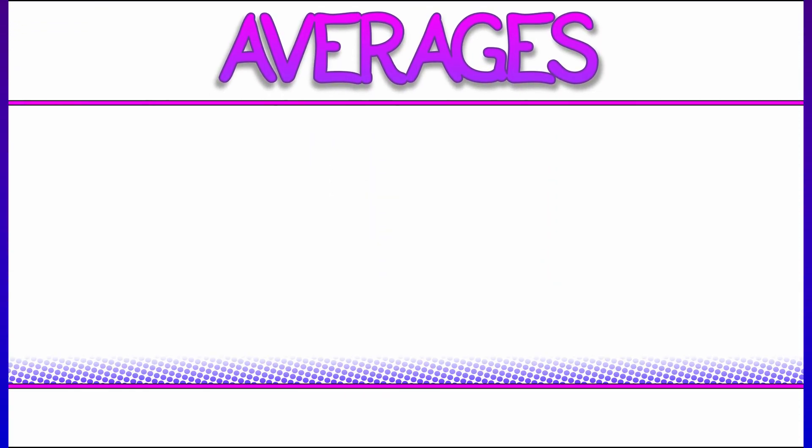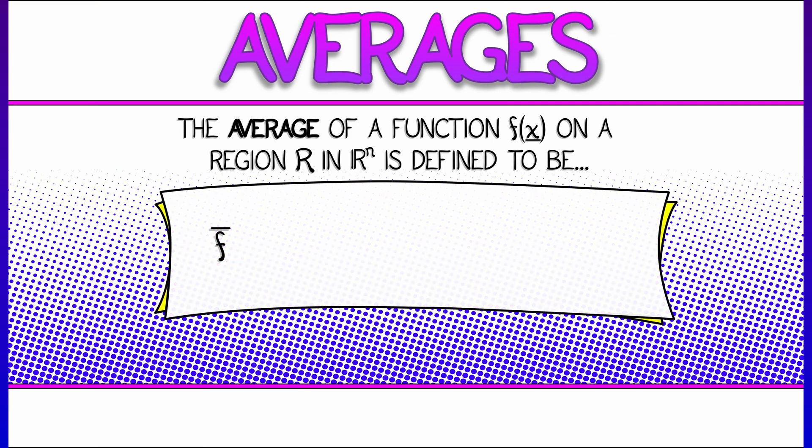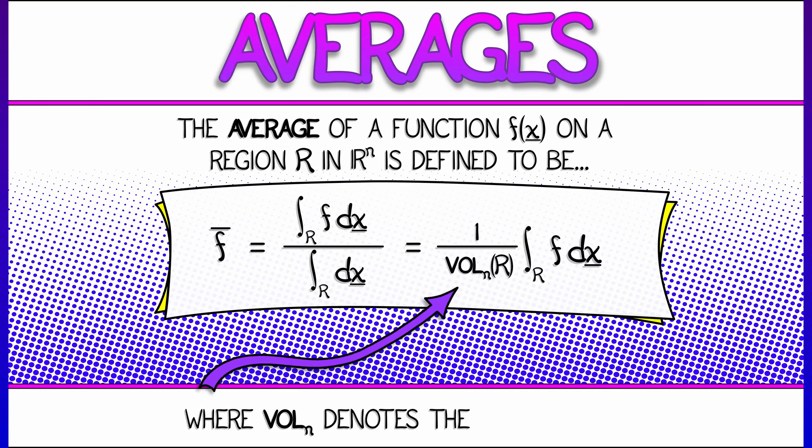Let's say that f takes on a real value on some region capital R in R^n. Then the average f bar is defined to be the integral of f over that region R divided by the integral of the function 1 over that region. In other words, we're taking the integral of f and we're normalizing by the volume, the n-dimensional volume of that region R.